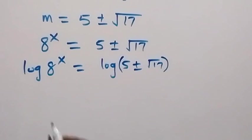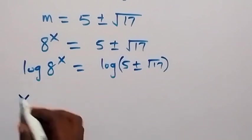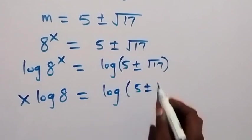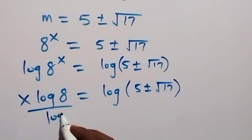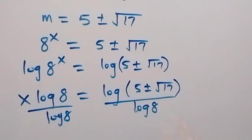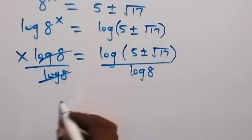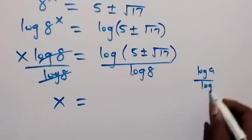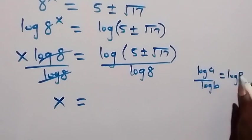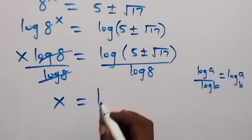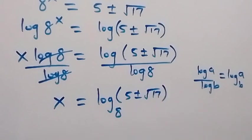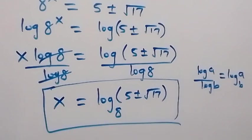Applying the power law of logarithms, x comes to the front: x log 8 equals log of 5 plus or minus root 17. Dividing both sides by log 8, and using the change of base rule where log a over log b equals log base b of a, we get x equals log base 8 of 5 plus or minus root 17. That is the solution to this problem. Thank you for watching — don't forget to subscribe for more exciting videos.